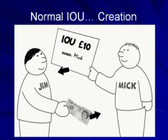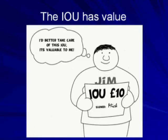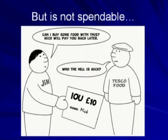The IOU that Mick created now has value. It acts as a record or proof of the loan, and could be referred to if Mick tried to claim that the loan never took place. But despite its value, Jim would find it almost impossible to purchase anything with it. We will return to this issue of non-spendability in a moment.